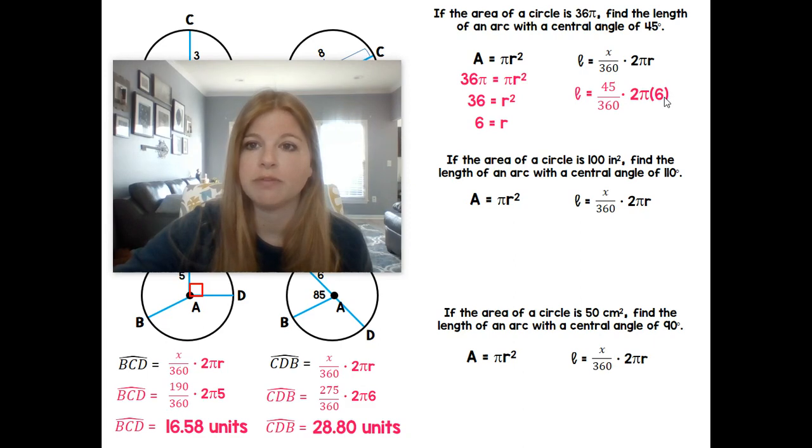Go ahead, plug in our values into our formula. So the length of the arc would be 45 over 360 times 2π6. And we should be able to get 4.71 units.